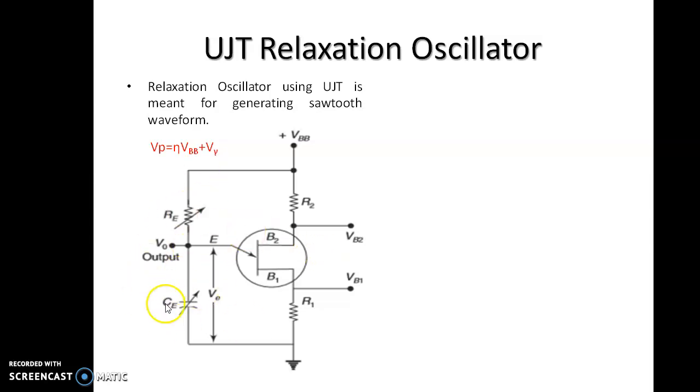If the voltage across the capacitor reaches VP, then the UJT starts conducting and the capacitor voltage is discharged rapidly through E, B1 and R1. As the capacitor voltage reaches zero, the device then cuts off and the capacitor starts to charge again. This cycle is repeated continuously generating a sawtooth waveform.